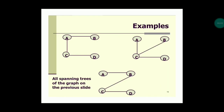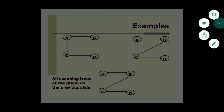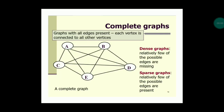Here are more examples of spanning trees. There is no cycle or repetition — vertices b, a, c, and d are all connected but do not form a cycle. The same applies to the other examples shown. Next, let's talk about complete graphs.